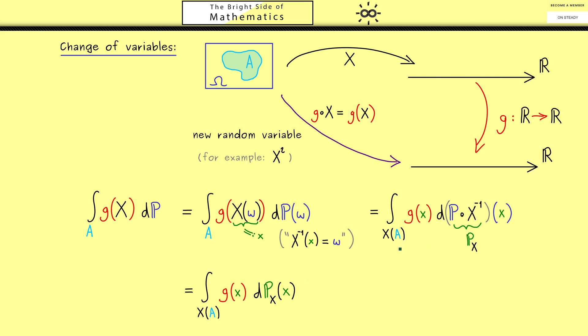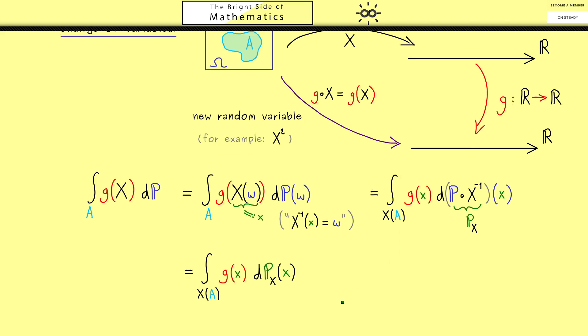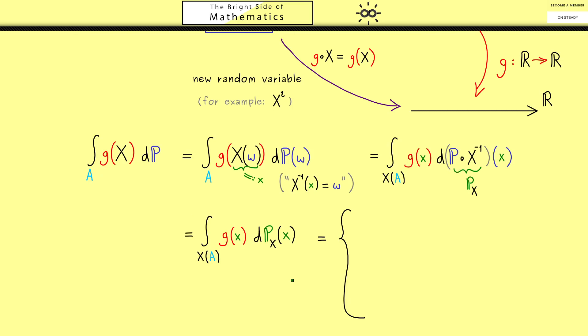The whole thing gets much simpler when we just consider discrete and continuous cases. Maybe let's start with the continuous case where P_X has a probability density function. This means we should have an ordinary integral, which means we can write dx. The important thing we have to include is the probability density function, denoted with lowercase f_X. So this is the PDF that describes the probability measure P_X. In other words, if we are in the continuous case, this abstract integral can be read as this normal integral.